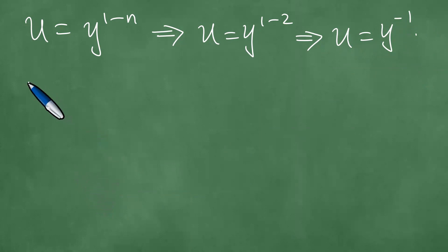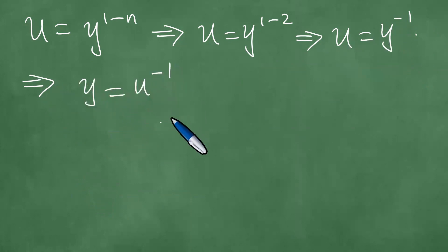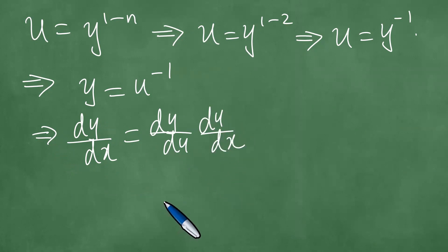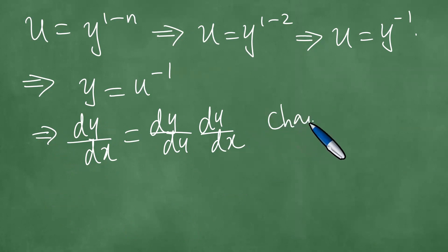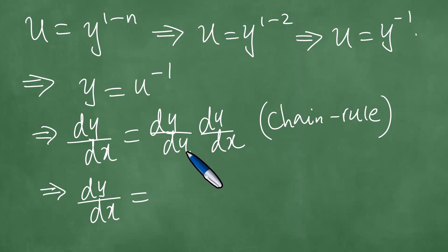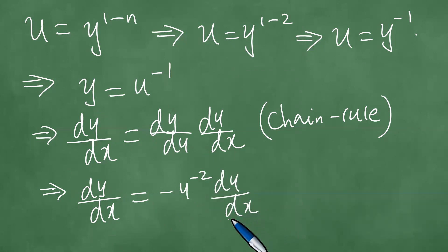Before we differentiate, we make y the subject of the equation and write y equals u to the power minus 1. Then we can find dy/dx using the chain rule of differentiation: dy/dx equals dy/du times du/dx. This means dy/dx equals minus u to the minus 2 times du/dx.